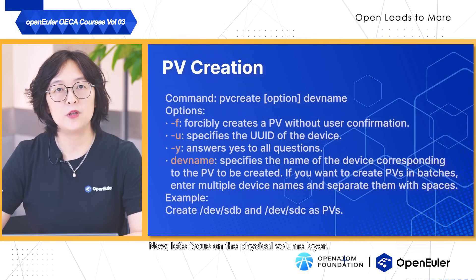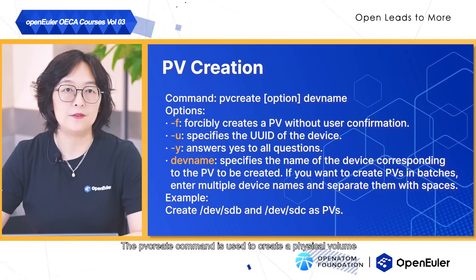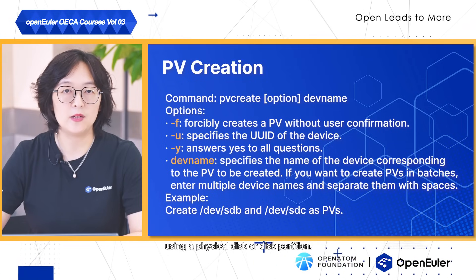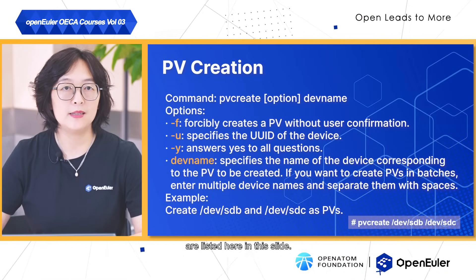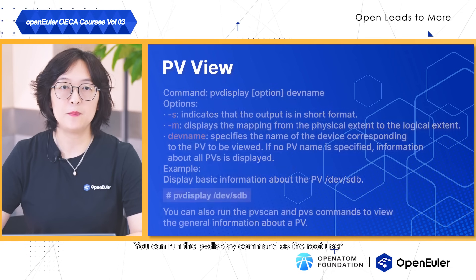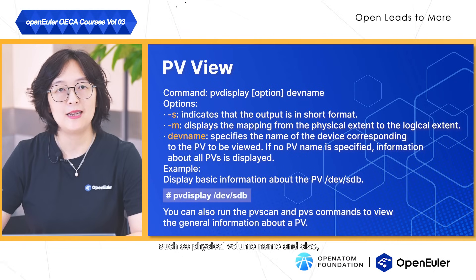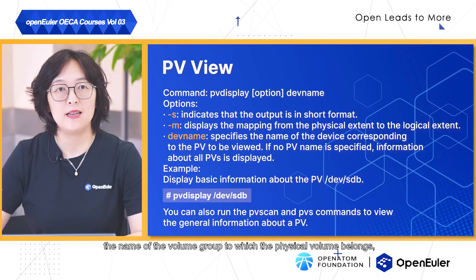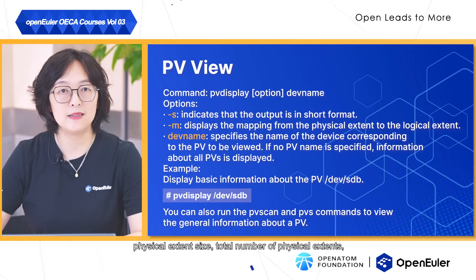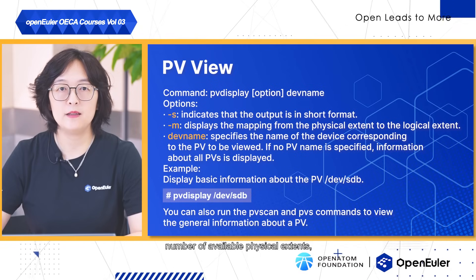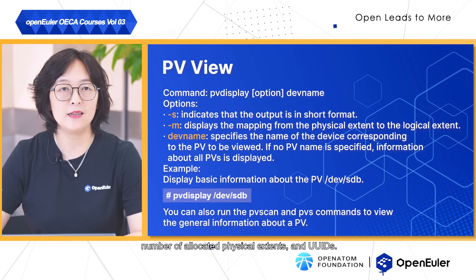Now let's focus on the physical volume layer. The pvcreate command is used to create a physical volume using a physical disk or disk partition. The command syntax, command options and examples are listed here. You can run the pvdisplay command as the root user to query information about a physical volume, such as the physical volume name and size, the name of the volume group to which the physical volume belongs, physical extent size, total number of physical extents, number of available physical extents, number of allocated physical extents and UUIDs.